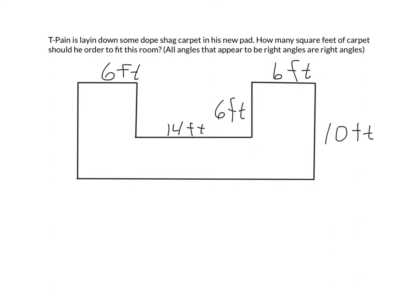Alright, so it's time for our first area problem. We have T-Pain — our wonderful friend T-Pain, who will probably come up quite a bit — laying down some dope shag carpet in his new pad. This was a big thing in the 70s. So how many square feet of carpet should he order to fit this room? All angles that appear to be right angles are right angles in this particular problem.